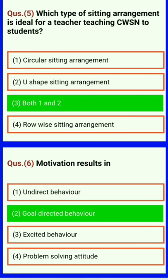Which type of sitting arrangement is ideal for a teacher teaching CWSN students? Circular sitting arrangement, U-shape sitting arrangement — both 1 and 2.